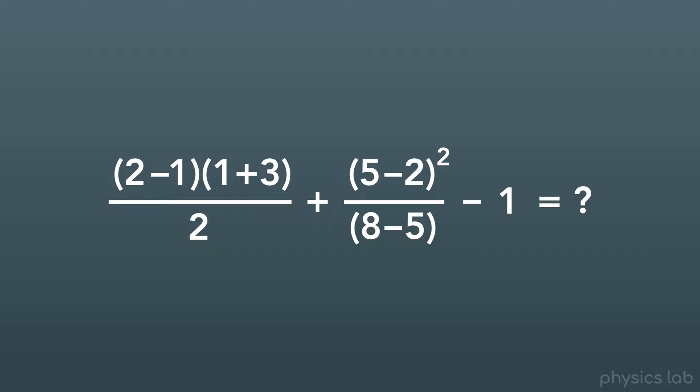There's actually an agreed-upon set of rules for what order you're supposed to do the math, and that's what we call the order of operations. The reason this exists is so that anyone can look at the same math written down or typed into a computer, and they'll all get the same answer.